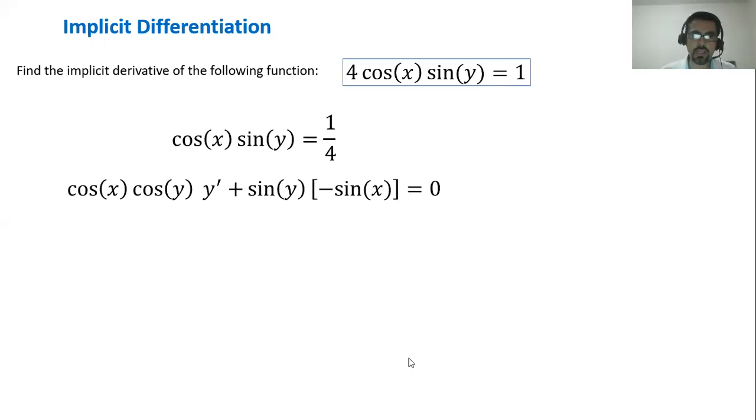When we differentiate the product here, this is a product of two functions. Function cosine x and function sine of y. Sometimes we call it u and v and we use the product rule. The product rule says that we take the first function times the derivative of the second function plus the second function times the derivative of the first function.